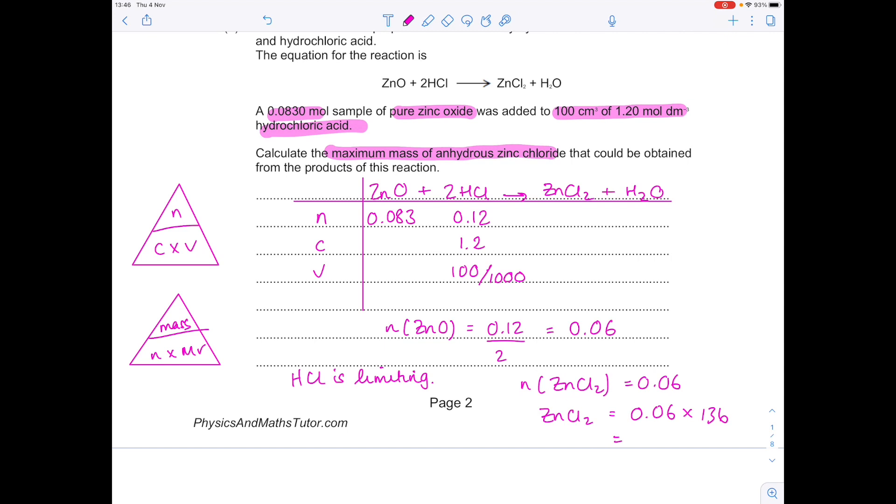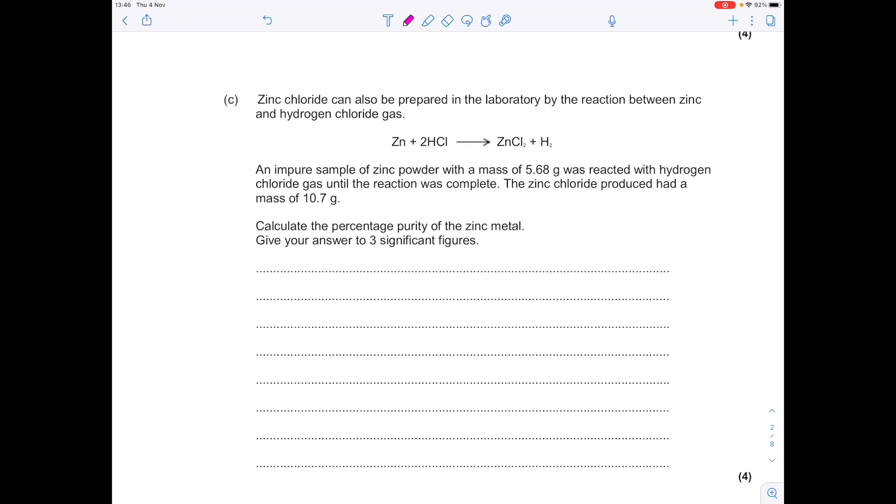Zinc chloride can also be prepared in laboratory by the reaction between zinc and hydrogen chloride gas. An impure sample of zinc powder with a mass of 5.68 grams was reacted with hydrogen chloride gas until the reaction was complete. The zinc chloride produced had a mass of 10.7 grams. Calculate the percentage purity of the zinc metal and make sure you give your answers to three significant figures. So, similar sort of setup. Let's write out that equation again. Draw the table. So here's the setup to this question. Because we're after the percentage purity of the zinc metal, we effectively need to find out x and then compare it to the quantity of zinc powder that we've been given in the question, which is 5.68. But for the moment, I'm going to call that value there x.